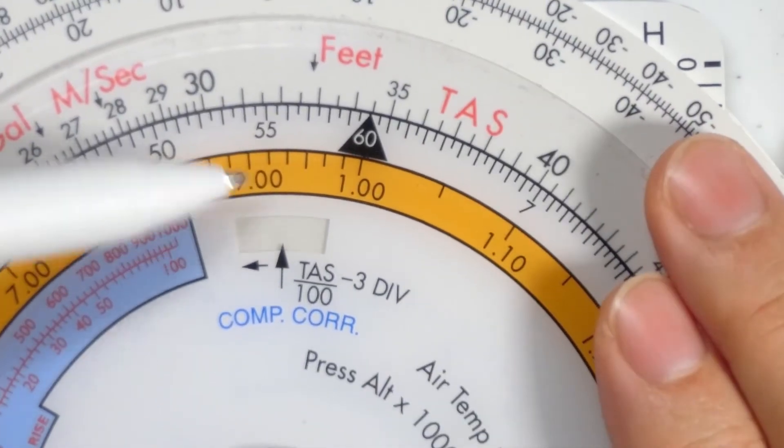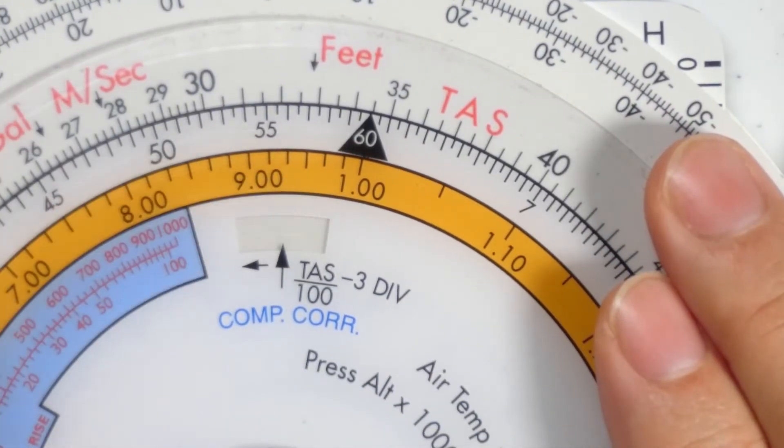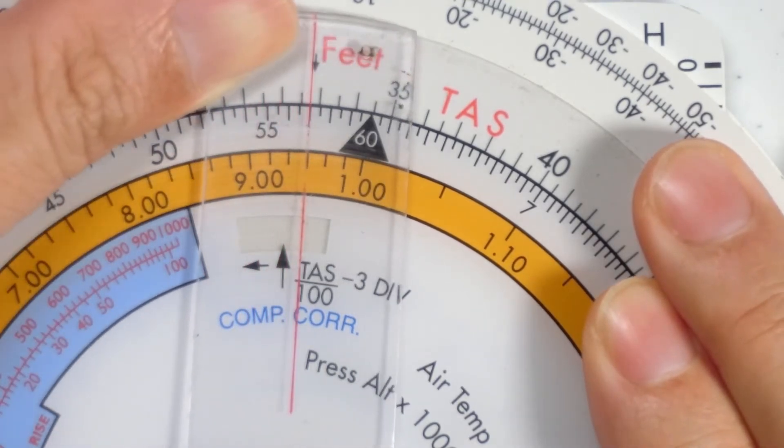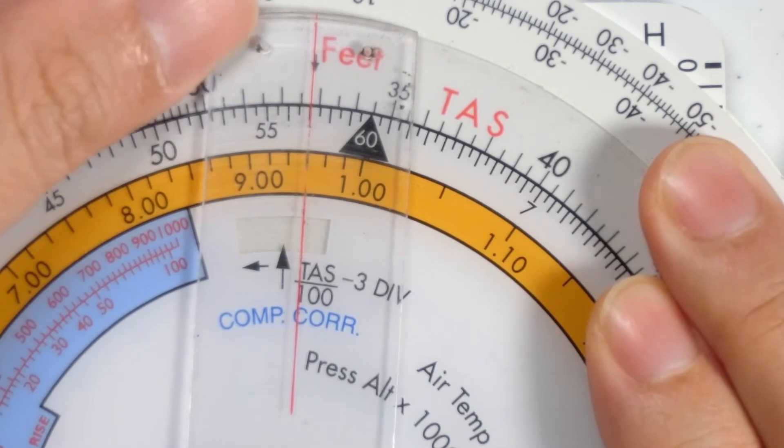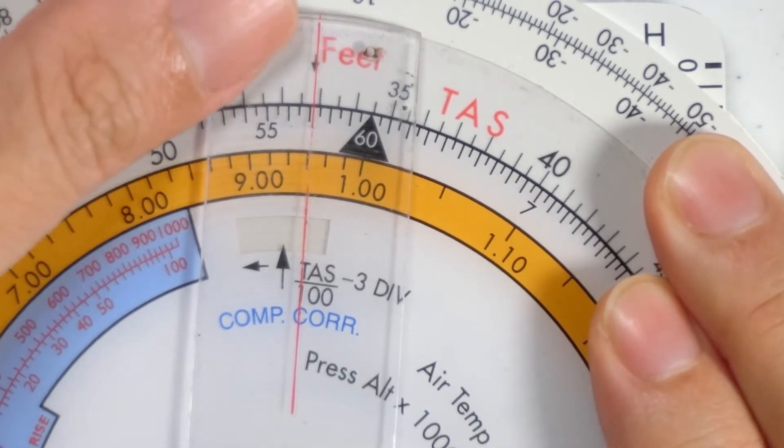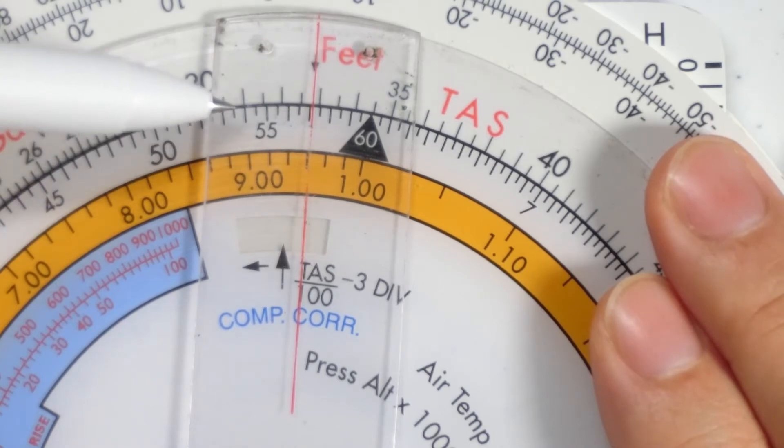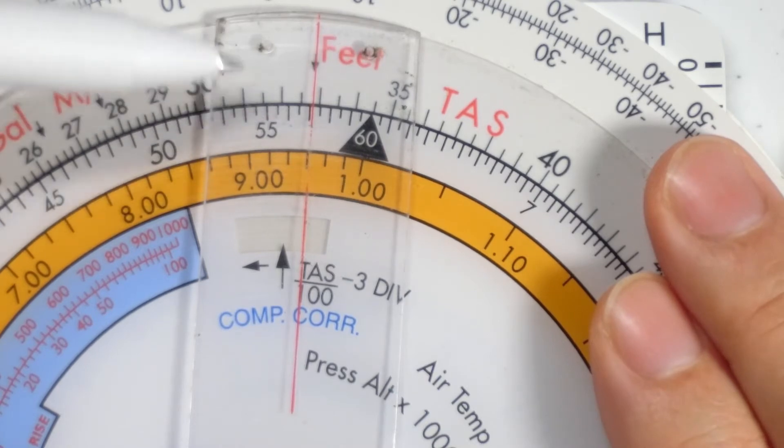I'm going to hold down the CRP-5 so that the scale doesn't move and I'm going to move the cursor to meet the feet arrow. So what do we have?